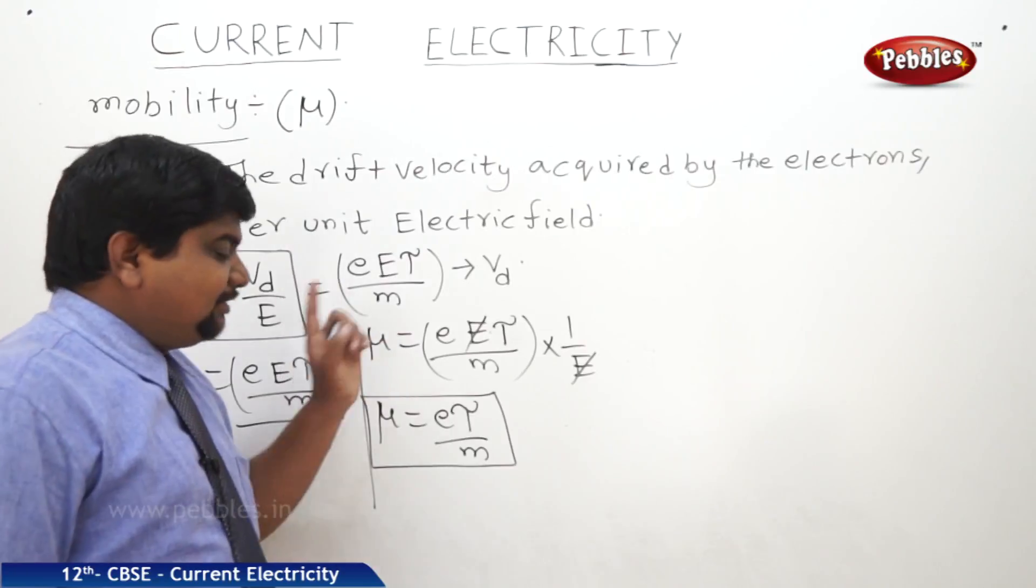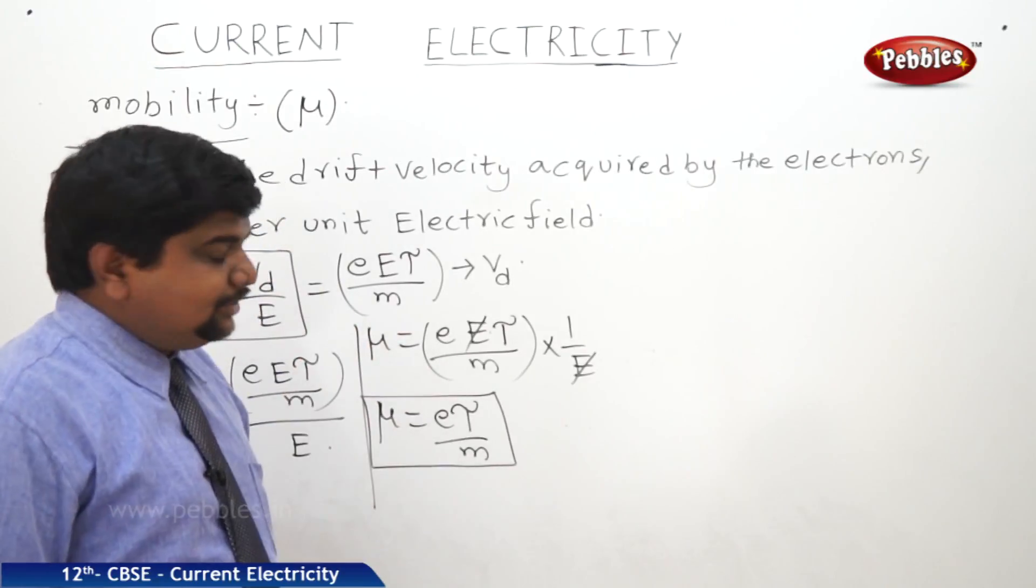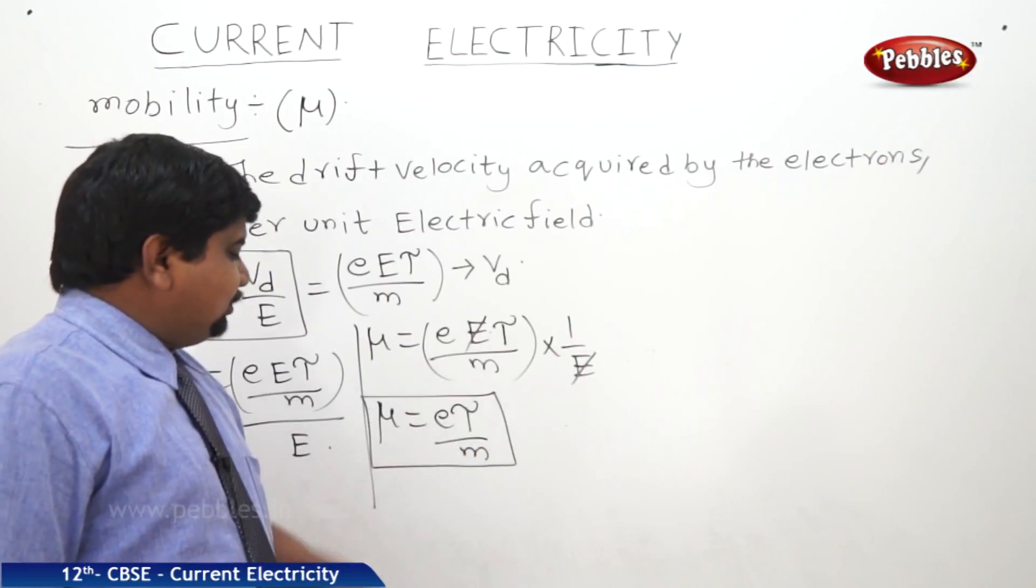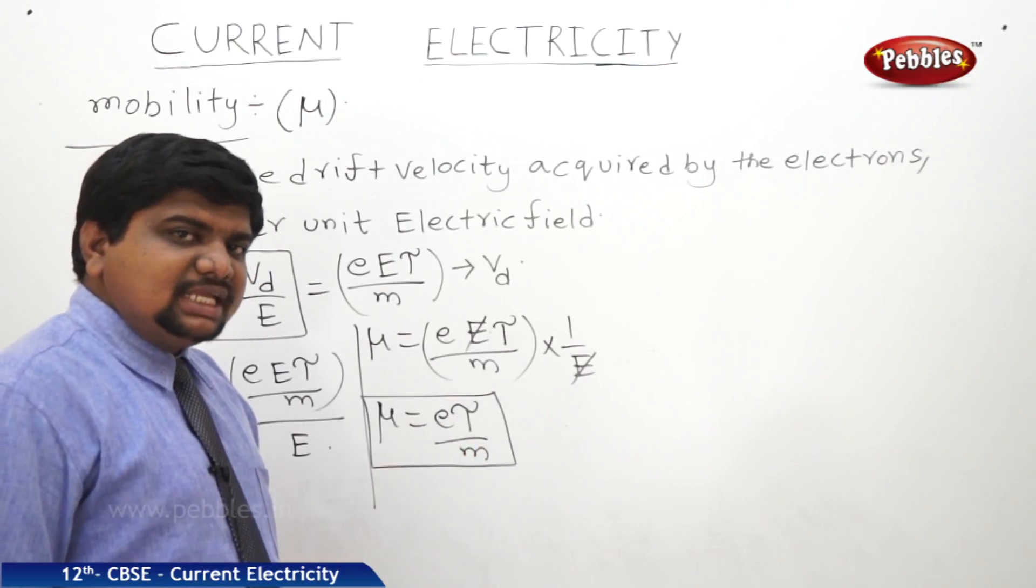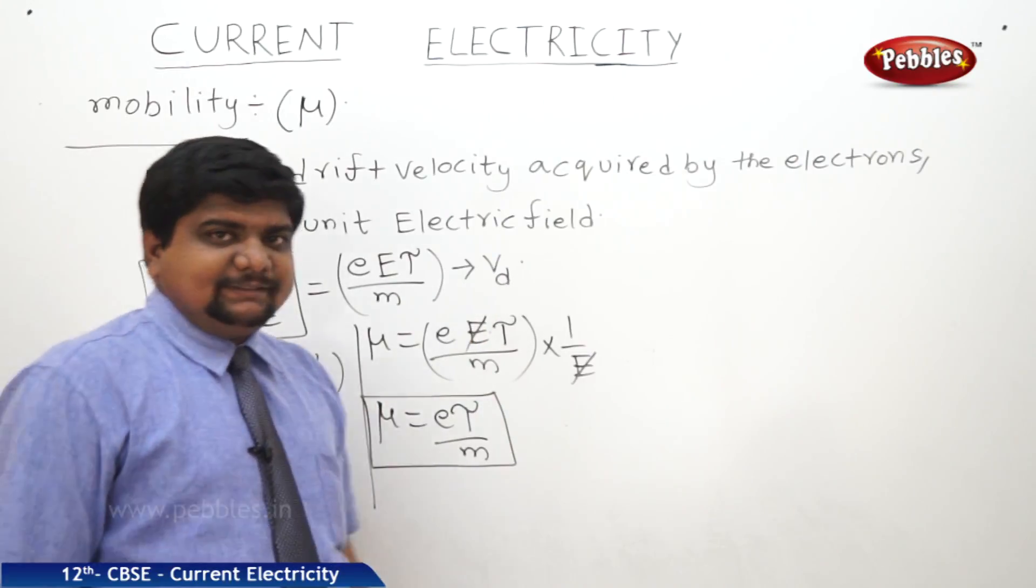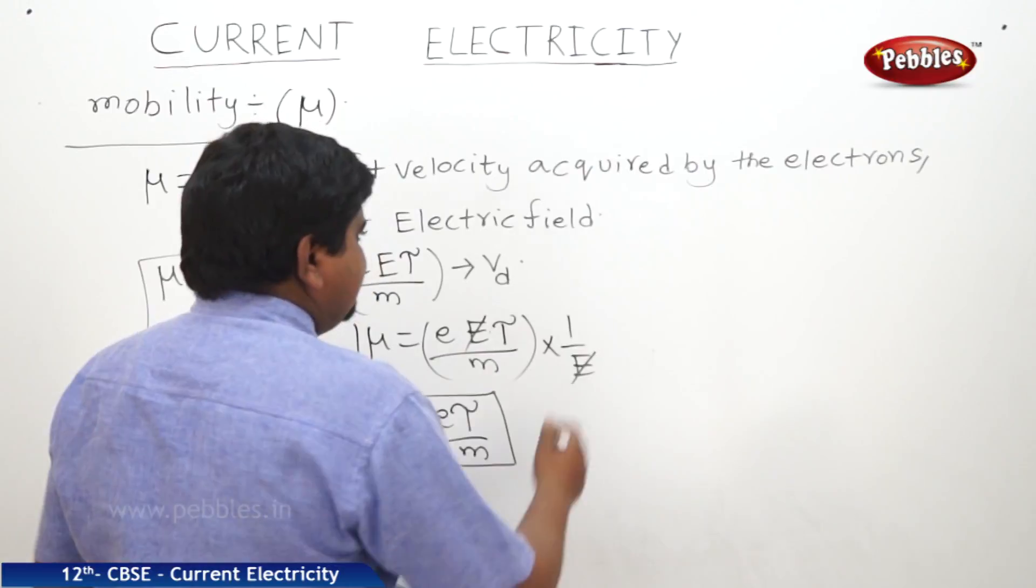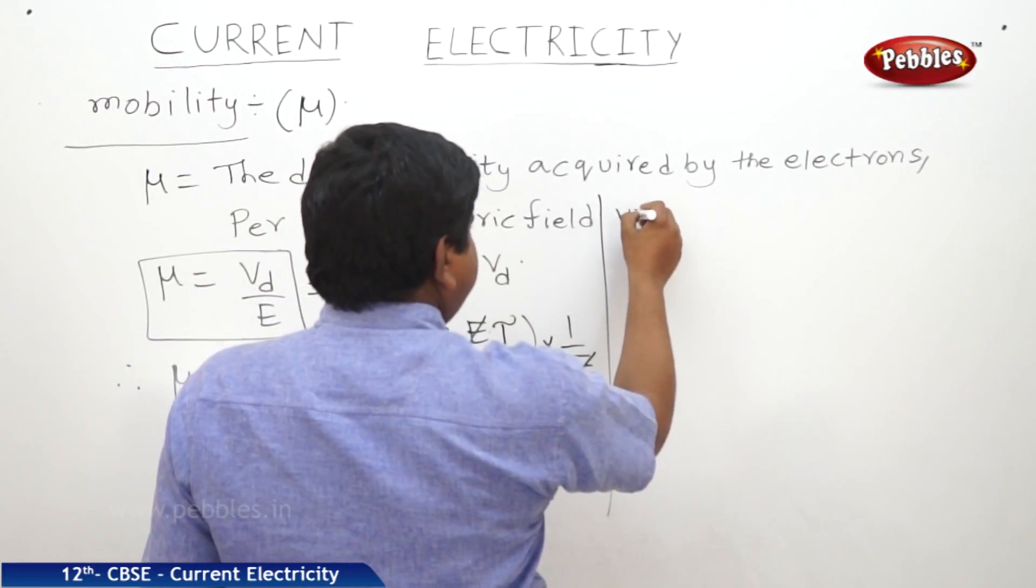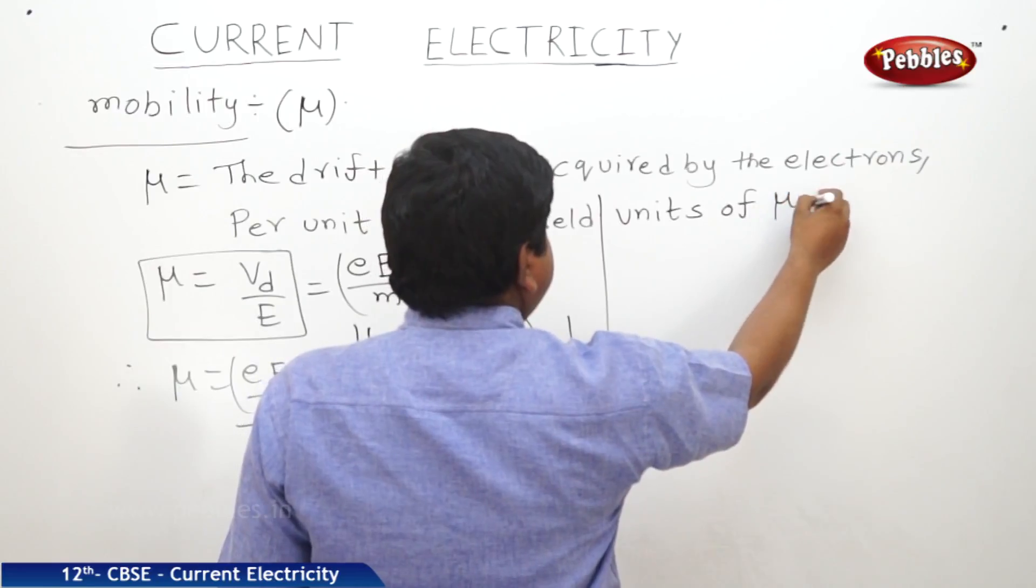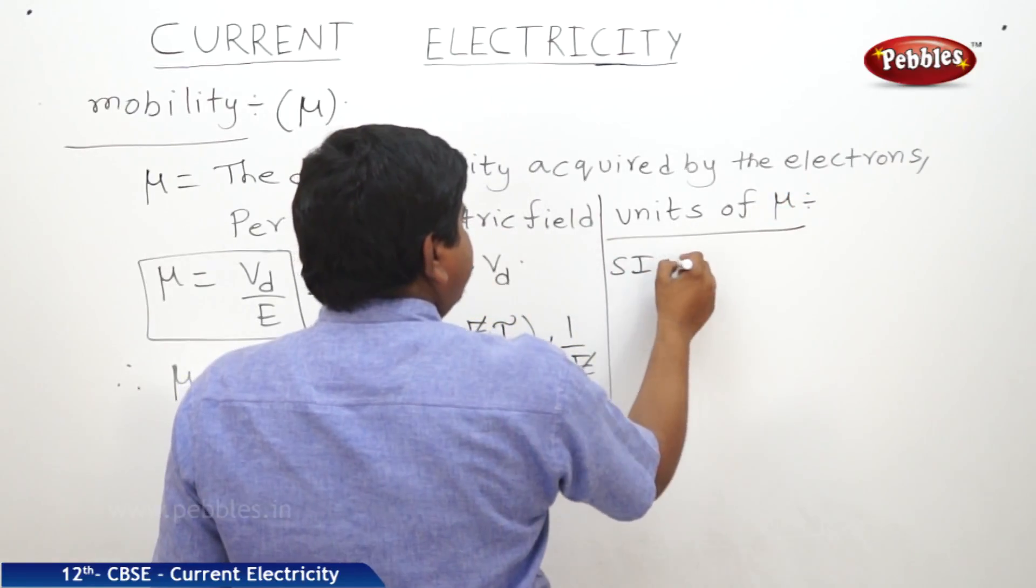We have discussed about j value, we have discussed about sigma value, we have discussed about resistivity, conductivity value. Next, mu is equal to e tau by m. Next, we will see what are the units of this mobility. Now, we are going to see the units of mu. What is the SI unit of mu?